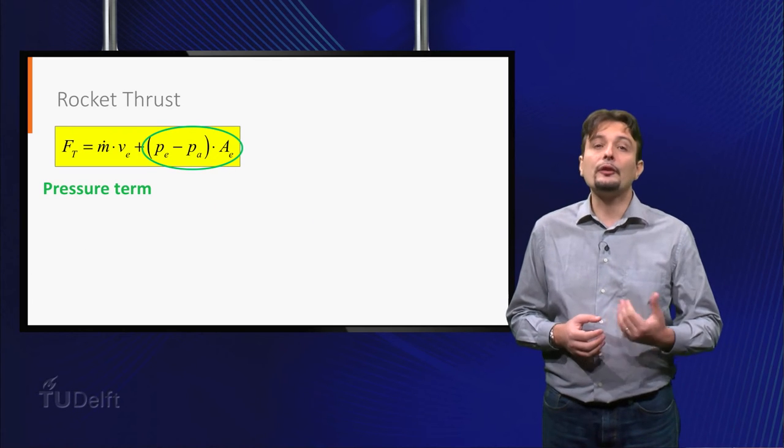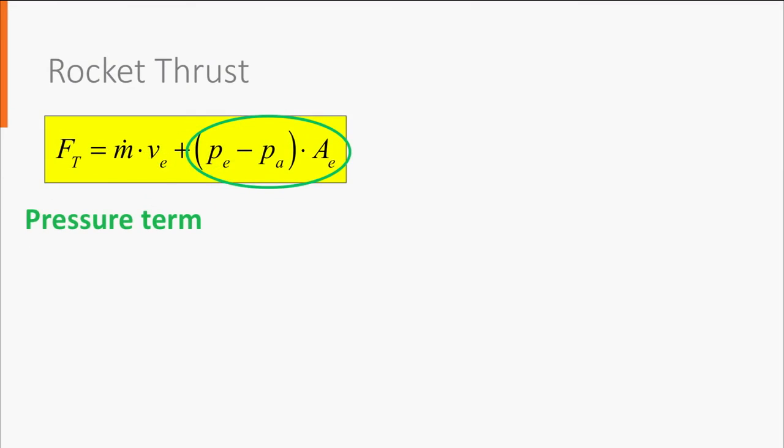Let's take a closer look at the pressure term. It is clear that this term is a function of the ambient pressure, and thus, the altitude at which the rocket is flying. Maximum thrust will be achieved in vacuum, where ambient pressure is zero.